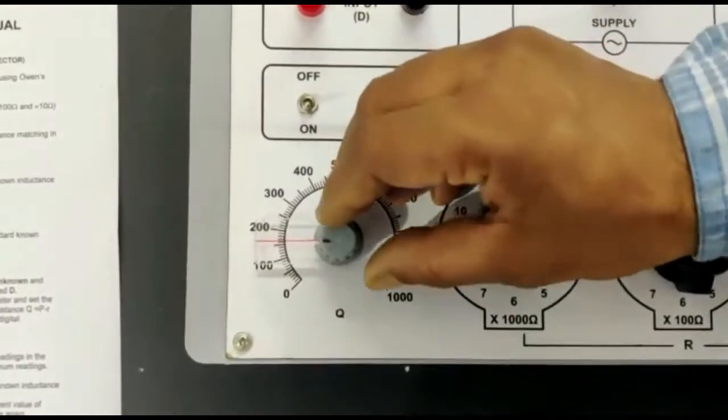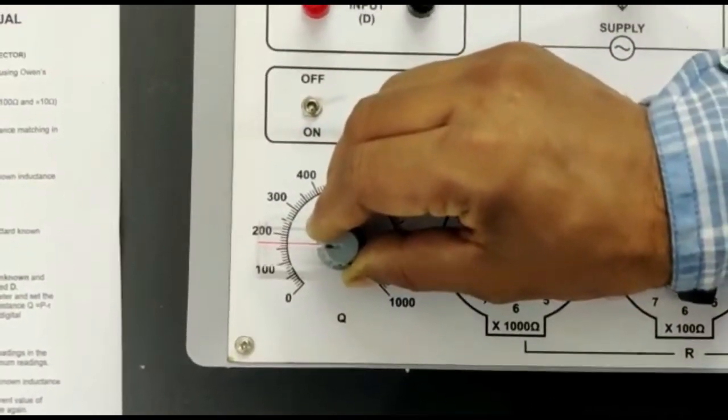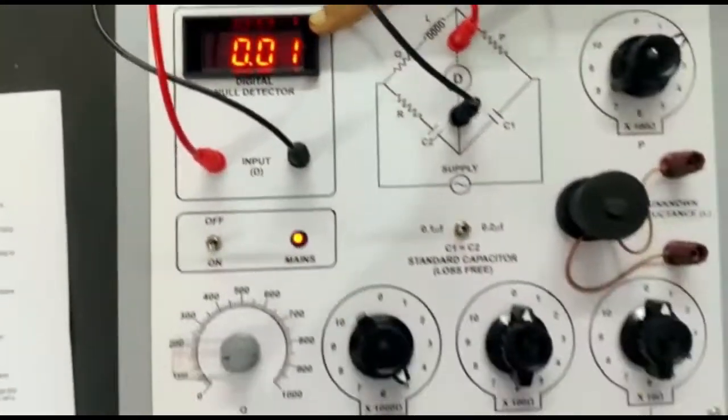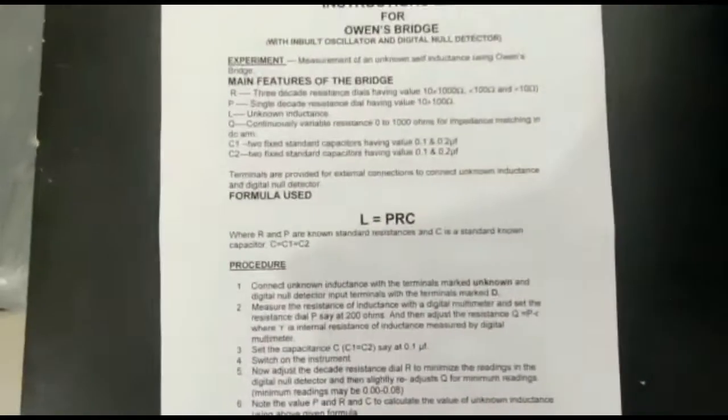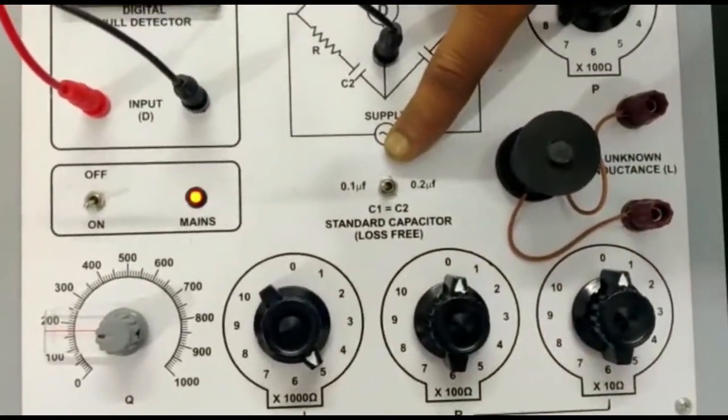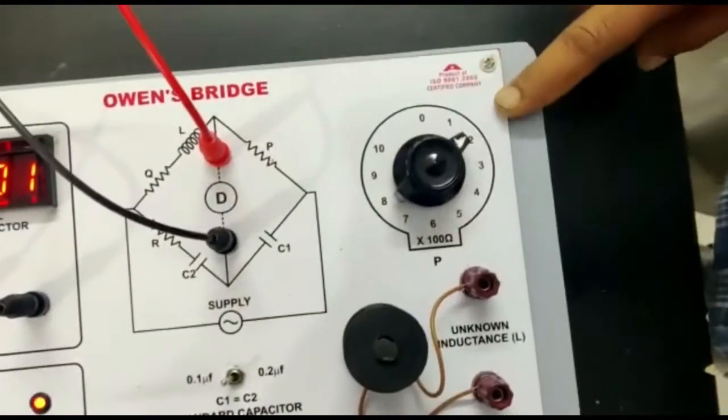Now here, slightly readjust the dial Q to find the minimum reading. This is the balance point minimum reading. Put these values into the formula to calculate the unknown inductors. You can also repeat the experiment at different values of C2 and P. Thank you.